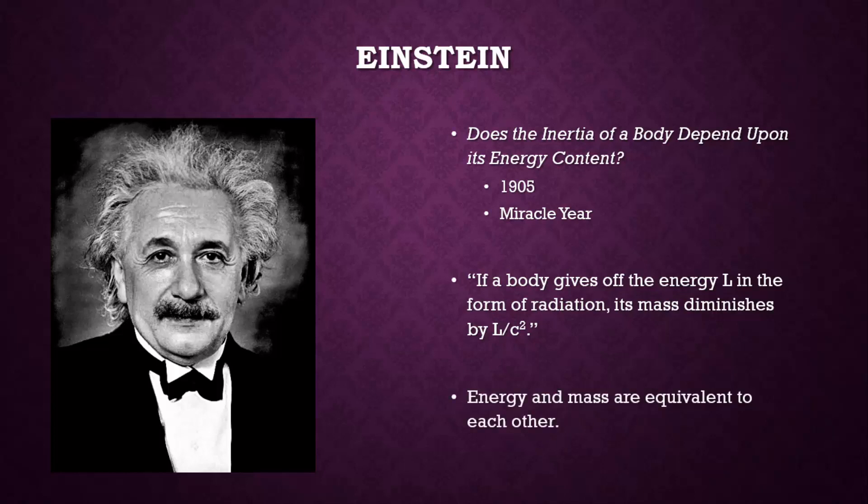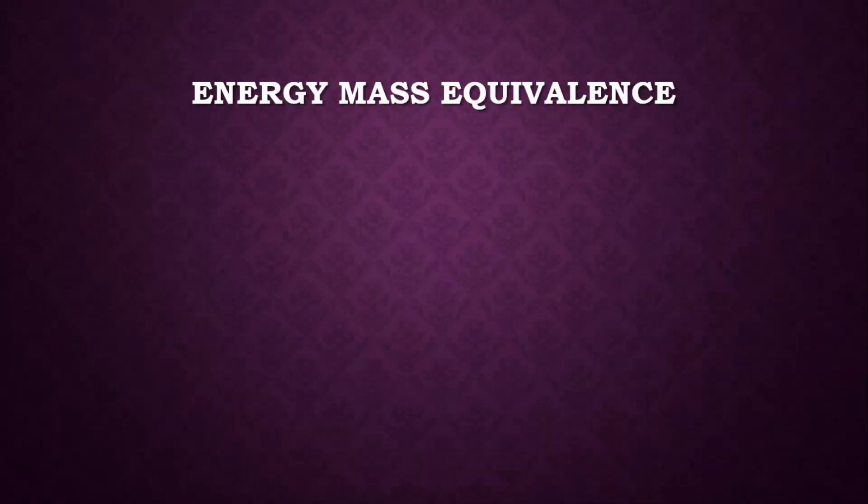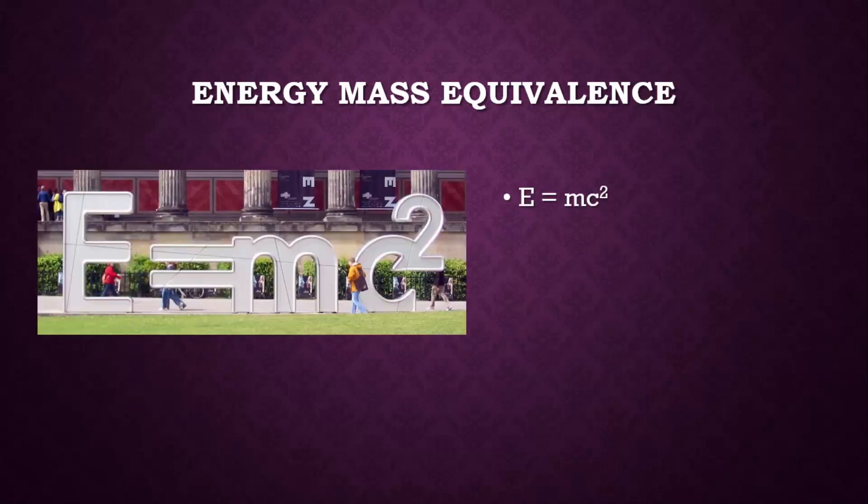In other words, this means that energy and mass are equivalent to each other. We are more familiar with the idea of energy-mass equivalence in the form of the equation E equals MC squared, where E stands for energy, M stands for mass, and C is the speed of light in a vacuum.